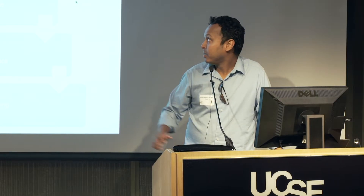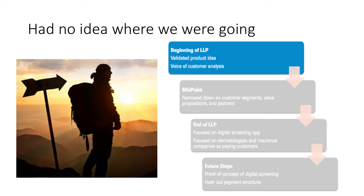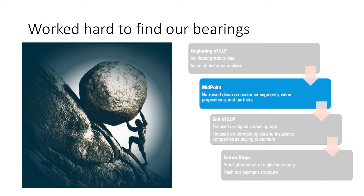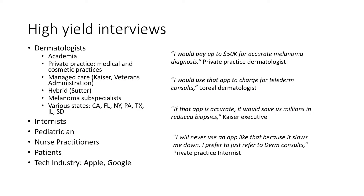Deep learning is being demonstrated to outperform humans in image classification. Here's an example: a task to classify 1 million images into 1,000 categories. Deep learning came on the scene in 2012 and has outperformed the rest in accuracy rates. Right now, using deep learning, we can achieve 3.5% error rates, which is better than a human for classifying general objects. So our idea was to take this new technology — deep learning.